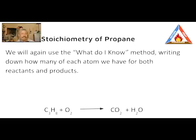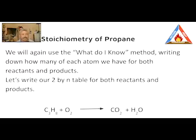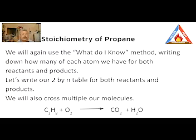We'll again use the 'what do I know' method, writing down how many of each atom we have for both reactants and products. We're going to write our 2×n table for both reactants and products. n is going to equal three because there are three atoms: carbon, hydrogen, and oxygen. And we will cross-multiply our molecules until the chemical equation is balanced.